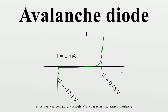Unlike Zener diodes that always maintain a voltage higher than breakdown, this feature provides better surge protection than a simple Zener diode and acts more like a gas discharge tube replacement. Avalanche diodes have a small positive temperature coefficient to voltage, where diodes relying on the Zener effect have a negative temperature coefficient.